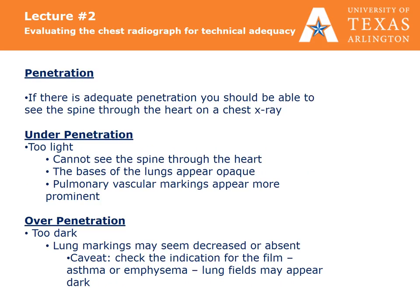If a chest x-ray is adequately penetrated, you should be able to see the spine through the heart. You will know that a chest x-ray is underpenetrated or too light if you cannot see the spine through the heart or the bases of the lungs appear opaque. Remember, this artifact could either mimic or hide disease in the lower lung field. So look closely at the lateral chest x-ray. Pulmonary vasculature markings appear more prominent than they really are on a light x-ray.